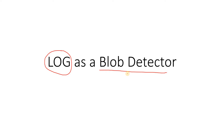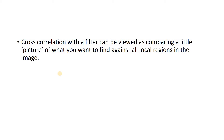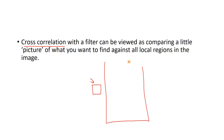Before going further with blob detection using LOG, let me give you a quick recap on cross correlation. Cross correlation is basically used to find out the similarity between two different signals. In the image processing domain, a very popular application of cross correlation is finding patterns. Suppose I have a small pattern and a very big image — I want to find in which locations of the big image this small pattern is appearing. To get that, we basically do cross correlation between the small image and the bigger image. In the output, we will get maximum values or bright pixels where the pattern is matched.